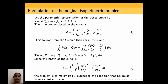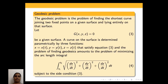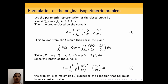Since the length of the curve is L equal to integral t1 to t2 of the square root of (dx/dt)² plus (dy/dt)² dt in parametric form, the problem is to maximize area A subject to the condition that the length integral has a constant value L. This is the reason for the name isoperimetric problem for problems involving extremizing an integral subject to another constraint.